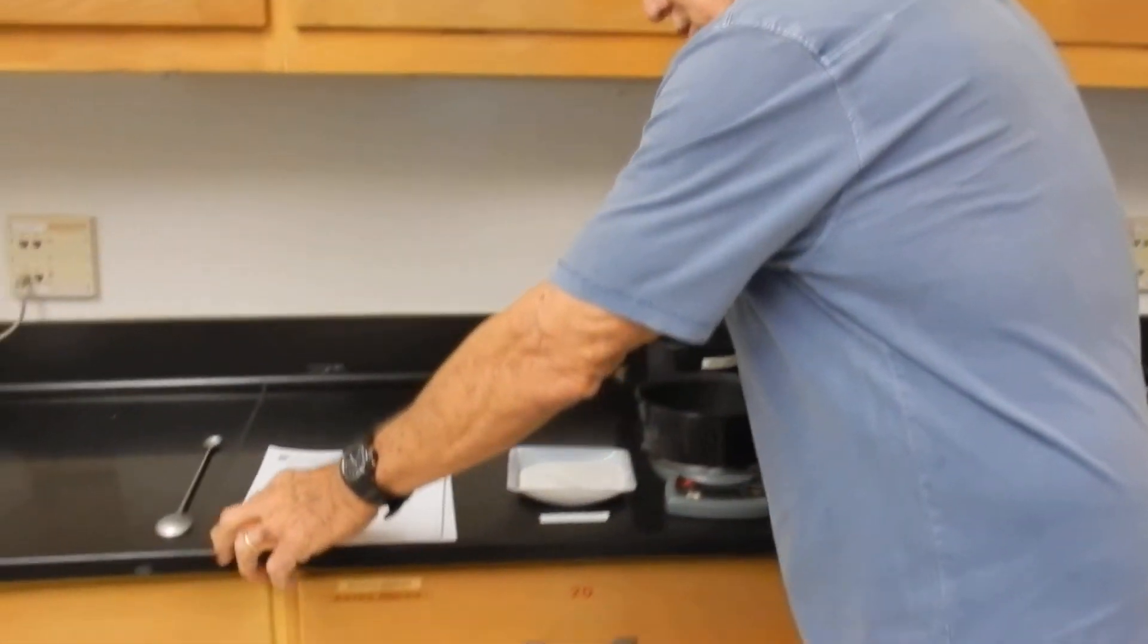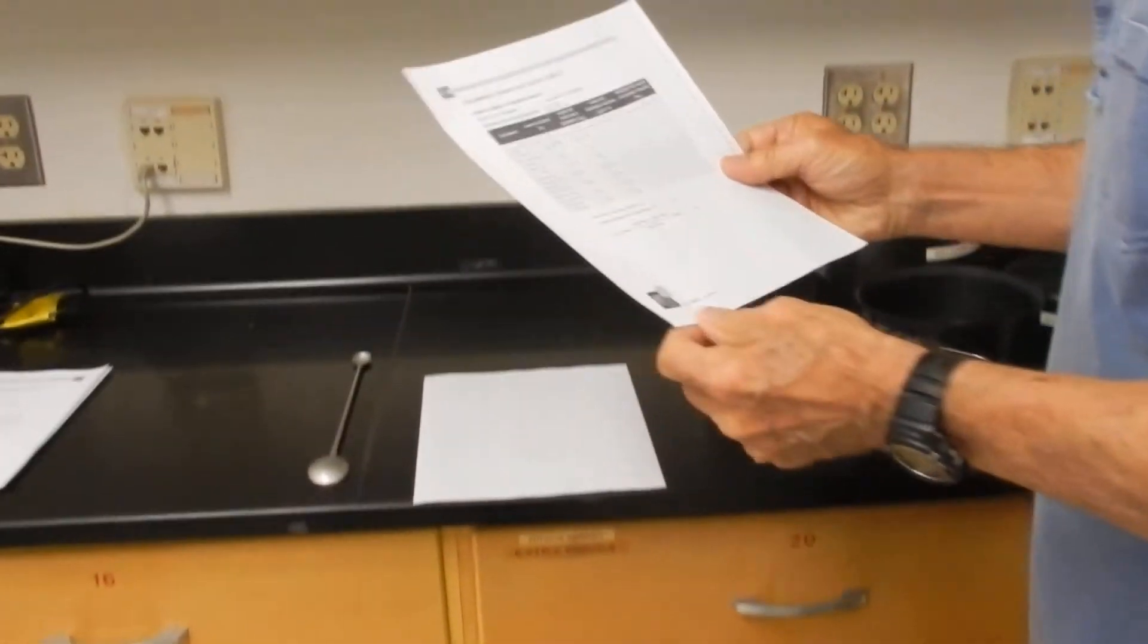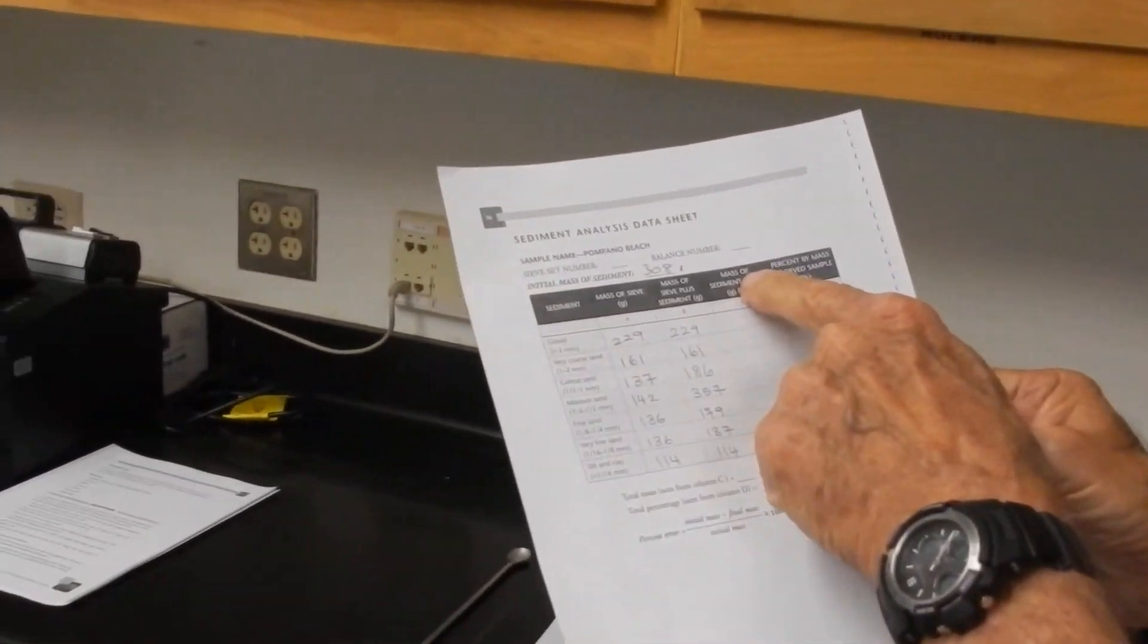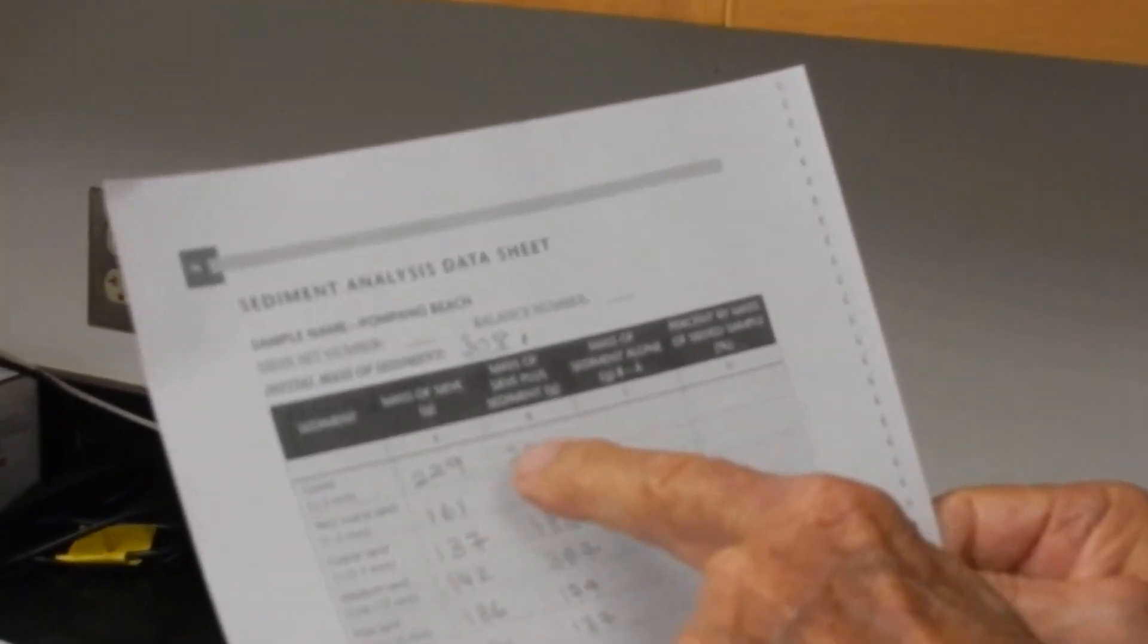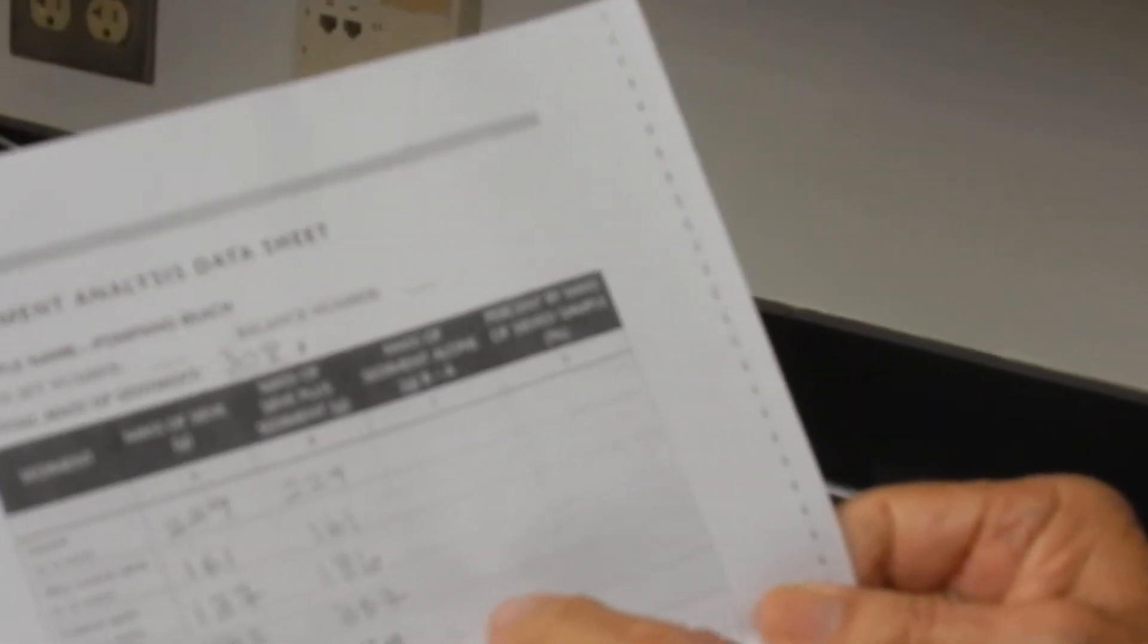So if you're looking at this data sheet, it's asking you to find the mass of the sediment alone. Now we got the mass of the sieve and second, the sieve and the sediment. So we'll need to subtract the two, and then we can find out the actual mass of the sediment in each size category. We'll need to subtract that, and from there we'll get the percentage. What percentage is coarse sand, what percentage is medium sand, and so on.